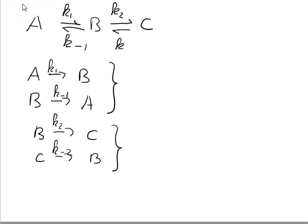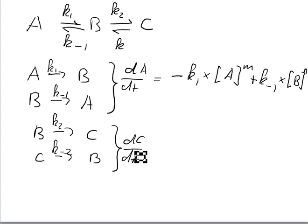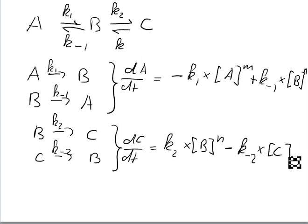So what we can do now is we can write dA over dt equals minus k1 times A to the power of M plus k minus 1 times B to the power of N. And we can do the same thing for C. dC over dt equals k2 times B to the power of N minus k minus 2 times C to the power of P.